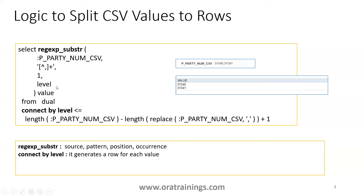The pattern is the comma separated pattern. The first occurrence corresponds to the level - CONNECT BY LEVEL generates a row for each value. Now, the logic uses the length of the party number minus the length of the value after replacing commas, which determines how many rows to generate.